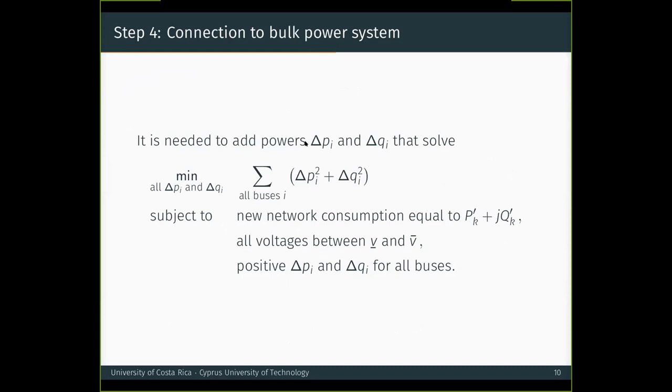To do that, we formulate the problem as follows. It is needed to add powers Δp_i and Δq_i that minimize some metric of the difference of those allocations. To illustrate, we employ the sum of the squares. And also this optimization problem must be subject to the new network consumption being equal to the one I showed in the previous slide, while the primary operates at the real voltage of the medium voltage network. Also that all voltages lie between some bounds to ensure either a diverse or a flat voltage profile, and finally, that all of those small loads are positive. In other words, this modification of the networks can be thought of as an optimal power flow problem. But instead of minimizing generation costs or losses, we minimize deviation from the allocation, which we designed in order to be realistic.